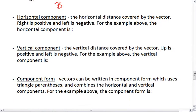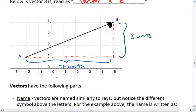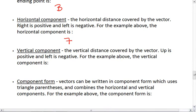This gives us the horizontal component, which is horizontal distance covered, of seven. Remember, if you move right, it's positive. If you move left, it's negative. Same idea applies to a vertical component. If you go up, we're positive. If you go down, we're negative. So our vertical component is a positive three.